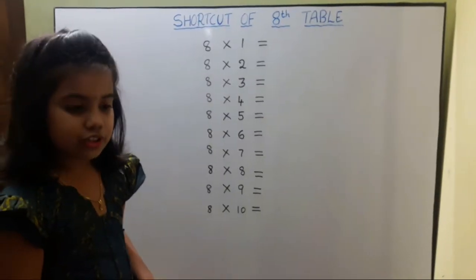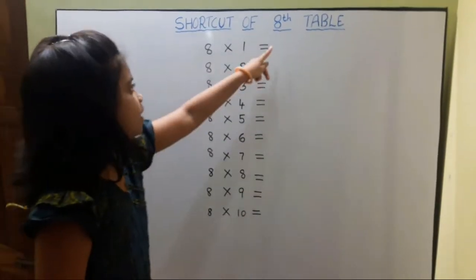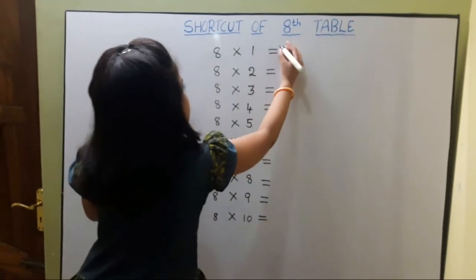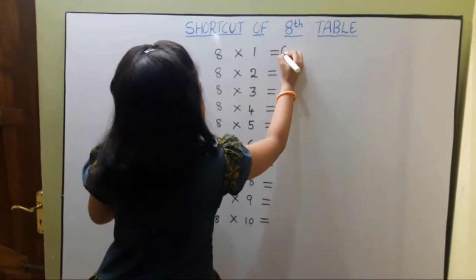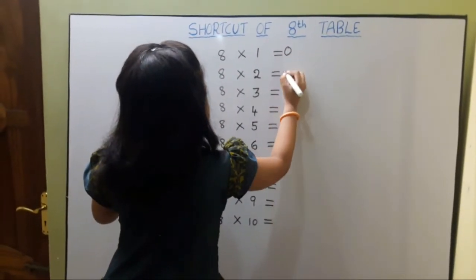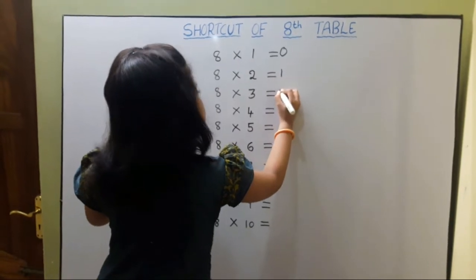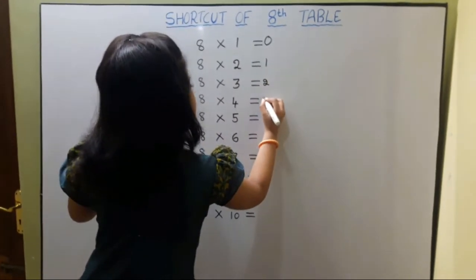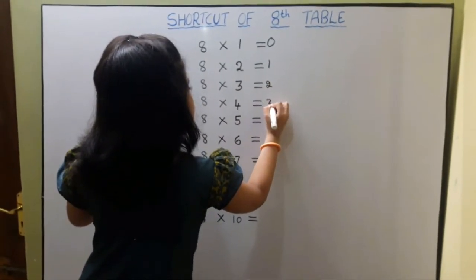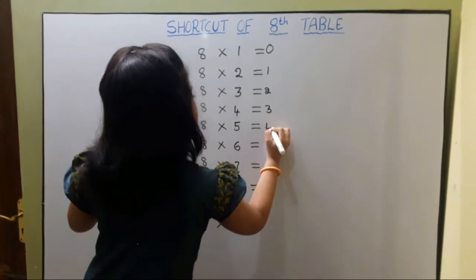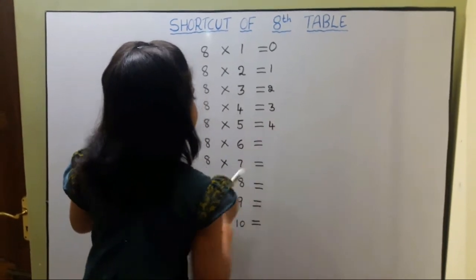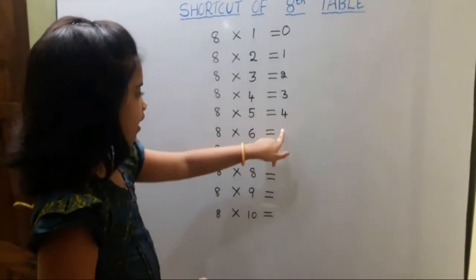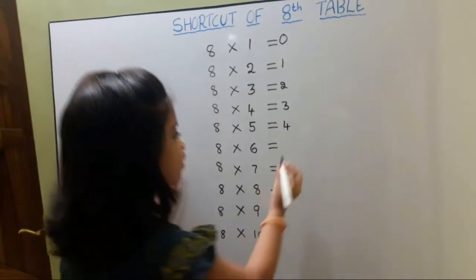First we should write 0 to 4. Again we should write 4 to 8.